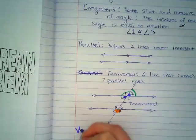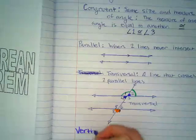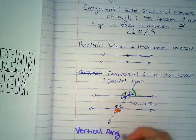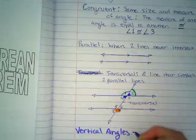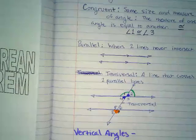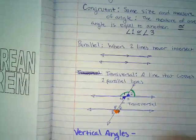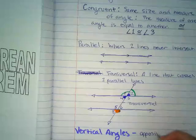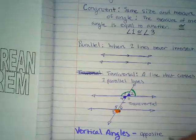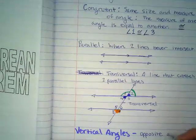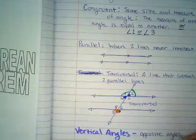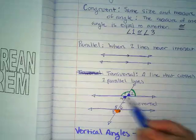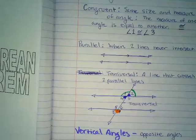So when we look at vertical angles, these angles are opposite each other in that kind of X formation that happens.